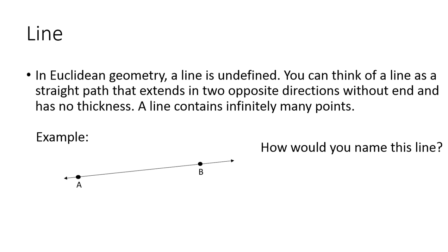Pretty simple. All right, next we have a line, and in Euclidean geometry, a line is also undefined. You can think of a line as a straight path that extends in two opposite directions without end and has no thickness. A line contains infinitely many points. So here I have an example of a line. So how would you name this line?